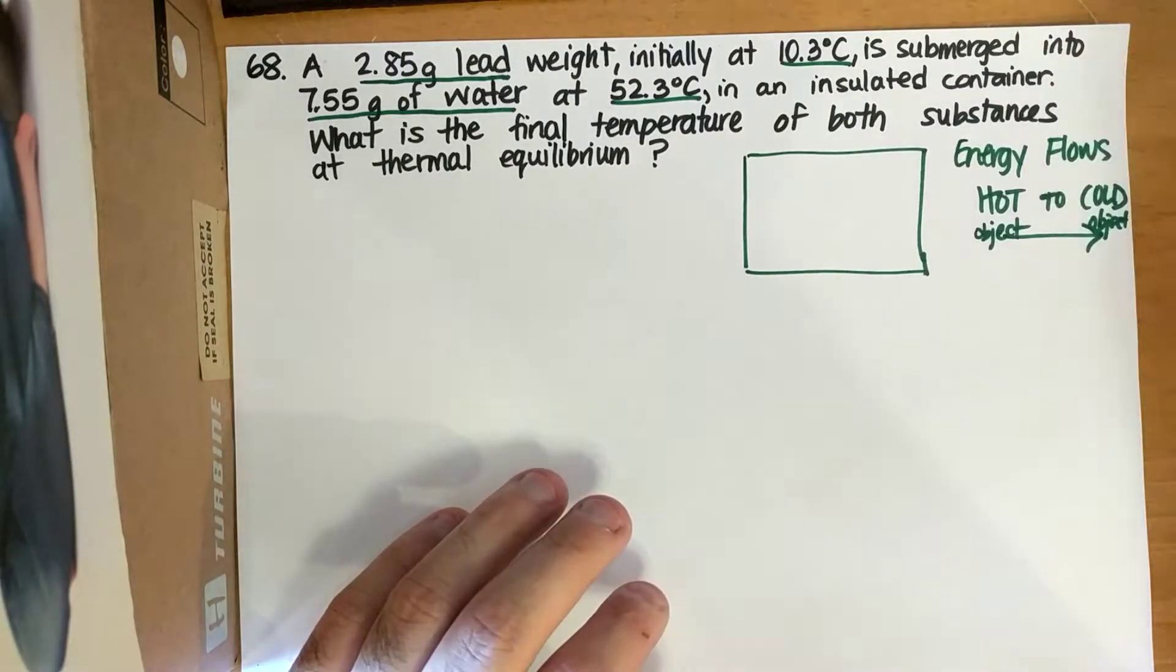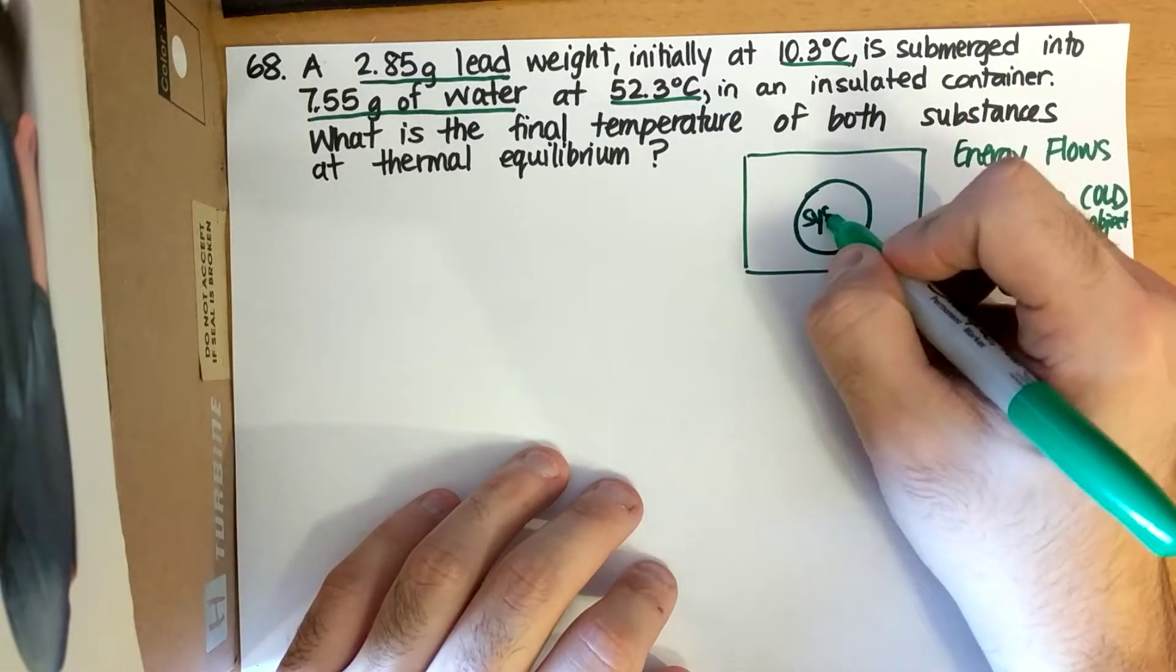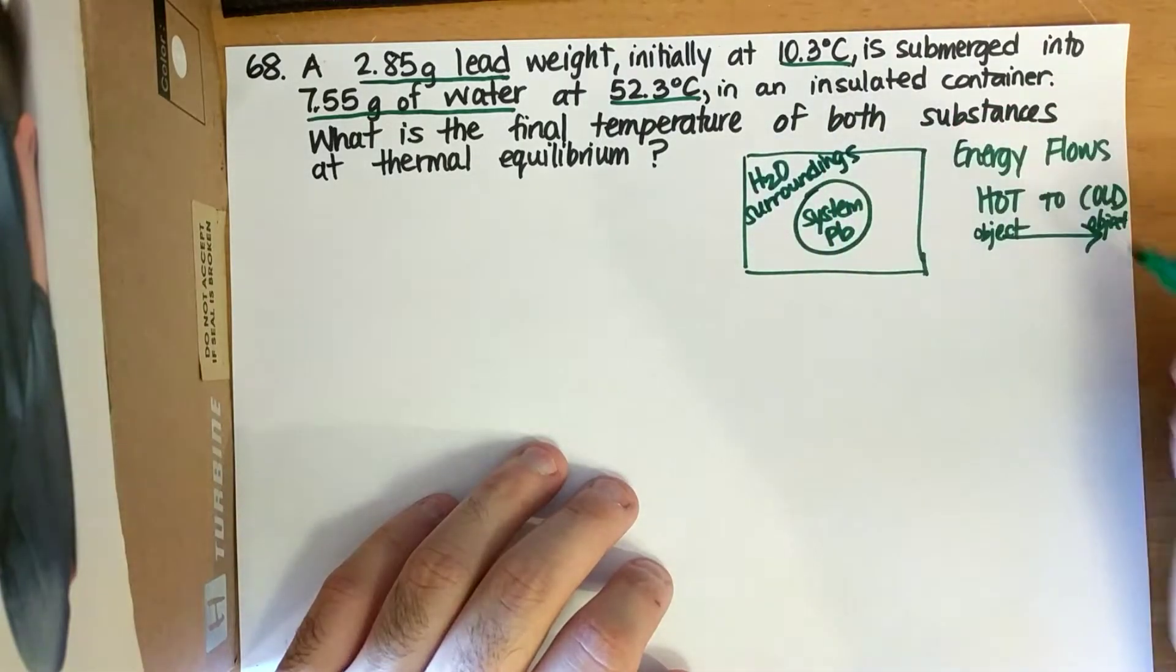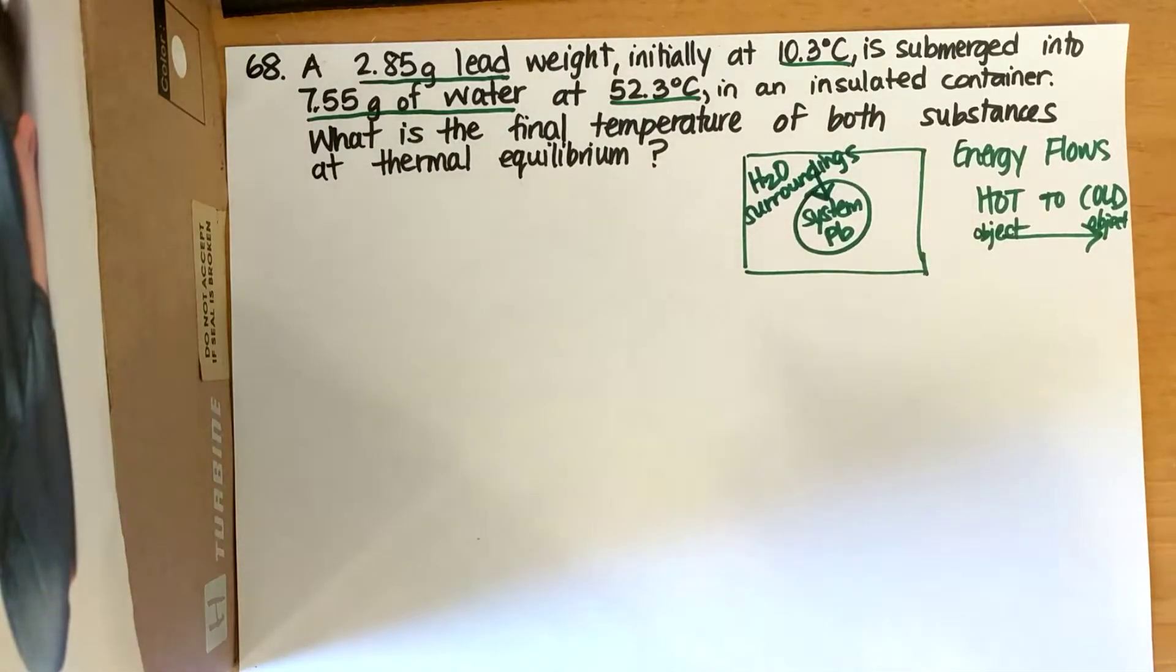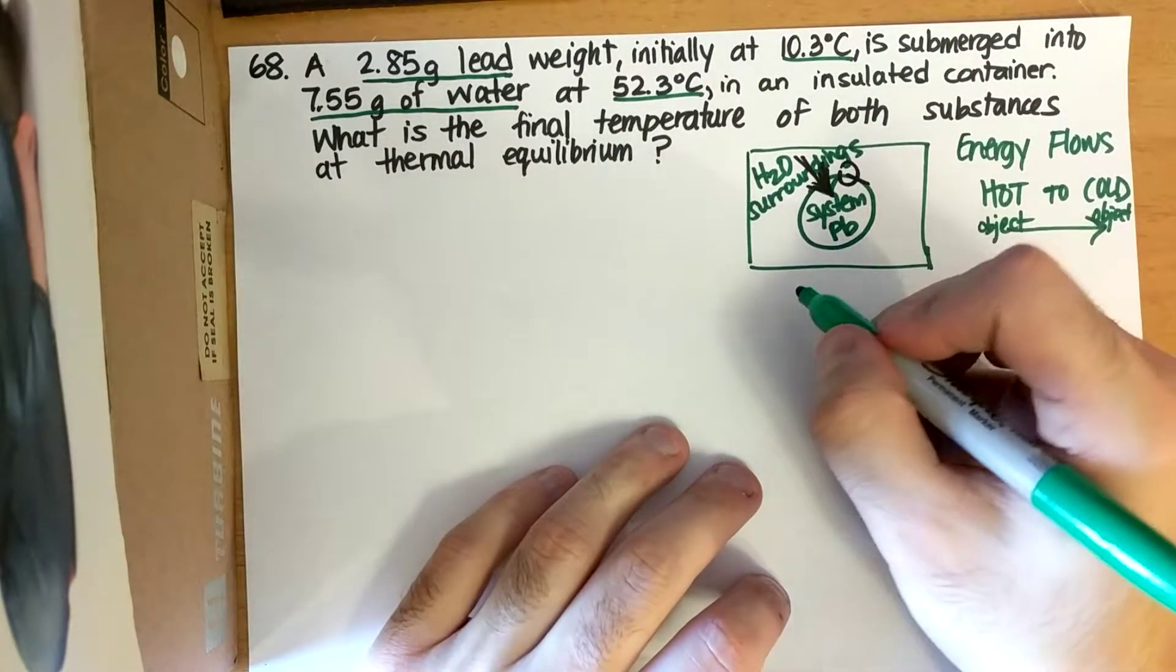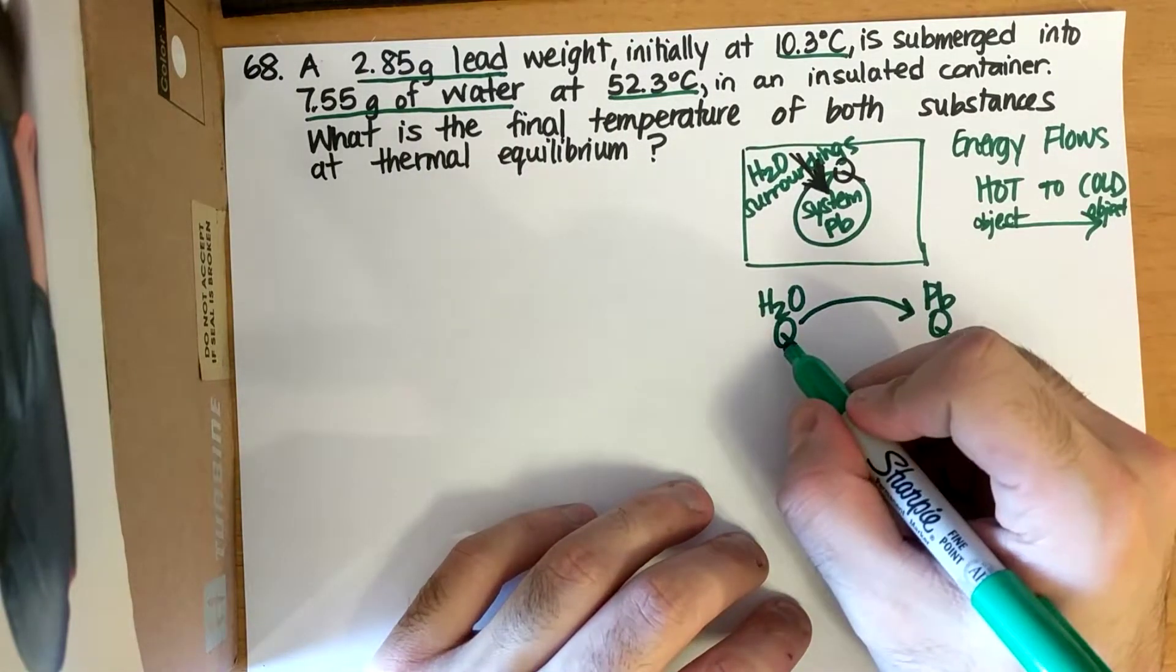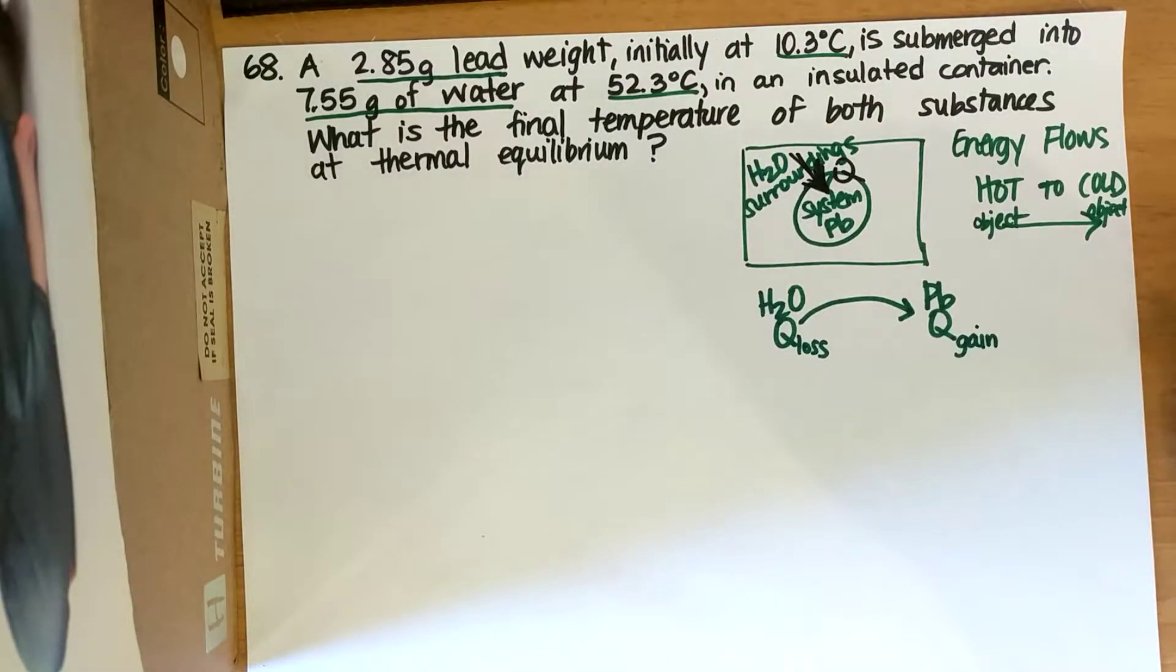So my water is going to be giving energy to the lead. So let me just draw kind of like my lead as my system. So here's my system, and I'm considering it lead. And my surroundings is going to be the water. This is my surroundings. Alright, and so the way energy is going to flow is it's going to flow from the water to the lead. So energy is flowing from the water to the lead. And so just a little bit even more, if I have H2O Q, lead Q, water is losing energy, and lead is gaining energy.